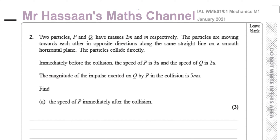P and Q have masses m and 2m respectively. The particles are moving towards each other in opposite directions along the same straight line on a smooth horizontal plane. The particles collide directly. Immediately before the collision, the speed of P is 3u and the speed of Q is 2u. The magnitude of the impulse exerted on Q by P in the collision is 5mu.